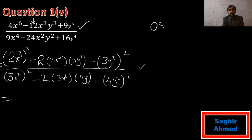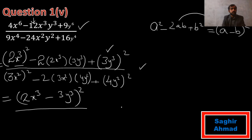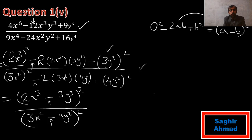Now it is in the form of a squared minus 2ab plus b squared. You know that a squared minus 2ab plus b squared can be written as a minus b whole squared. For the numerator, a is 2x cubed and b is 3y cubed, so we write 2x cubed minus 3y cubed whole squared. For the denominator, a is 3x squared and b is 4y squared, giving 3x squared minus 4y squared whole squared.